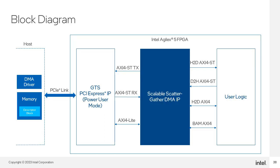This block diagram illustrates the connections between the host and the PCIe IP and logic in an Agilex 5 FPGA, including the SSGDMA. On the left, we have the host system and memory. The host DMA driver accesses DMA descriptors which contain DMA transfer information and reside in the host memory. The host connects to the Agilex 5 FPGA via the PCIe link. The GTS PCIe IP in power user mode connects to the SSGDMA IP using the AXI 4 stream interface and light interfaces discussed earlier. User logic on the right side connects to the SSGDMA IP with three port types plus a fourth BAM AXI 4 port used for burst memory read and write operations.